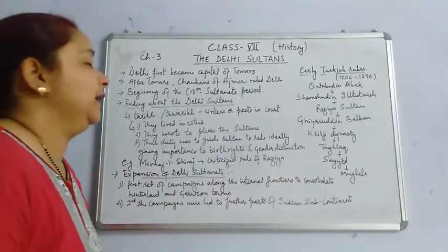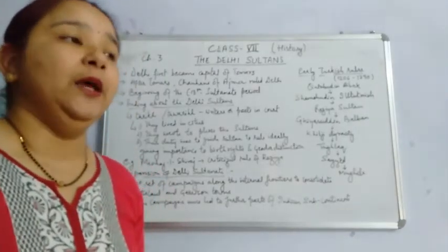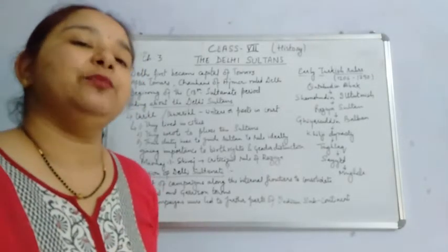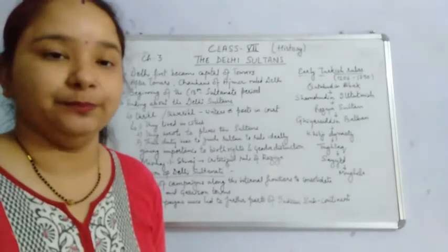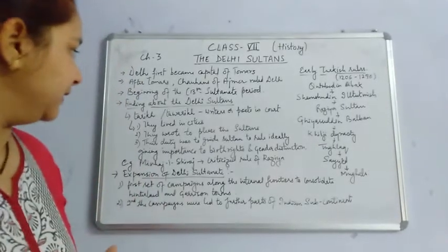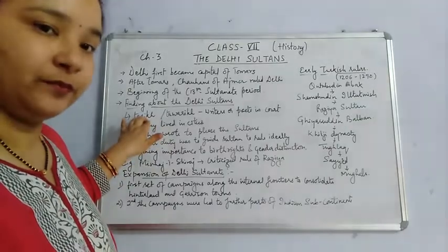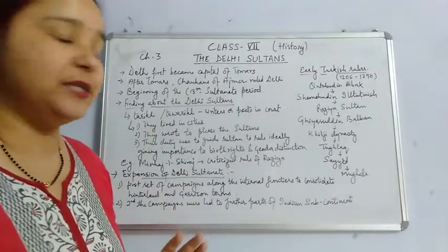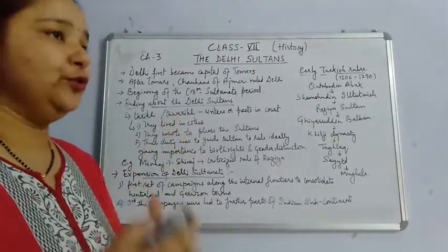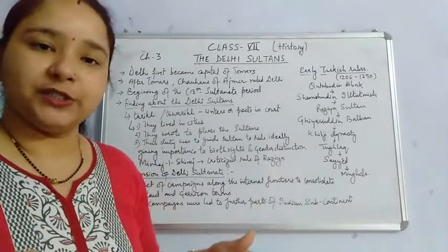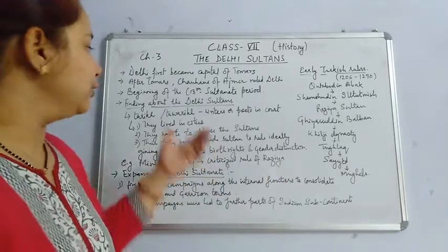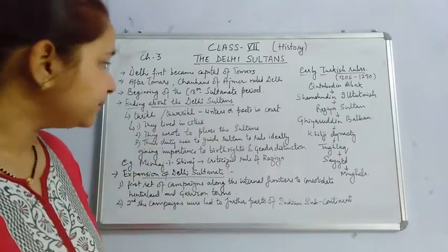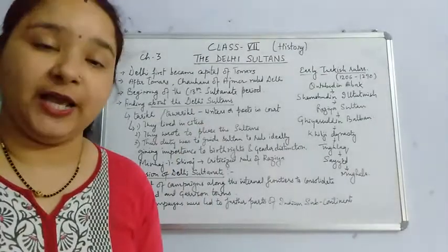Now, talking about the Delhi Sultans — where do we get information about them? A tradition started with them: they specially appointed writers and poets in their royal courts, and these writers and poets were supposed to write about their histories. These writers were called 'Tarik' if one particular individual was writing, and 'Tawarikh' if more than one person was writing the history of the Sultan. Their written accounts became an important source of information for the Sultanate period.